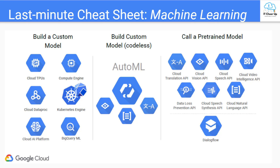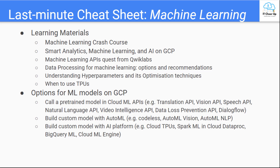If a pre-trained model couldn't work for your case, then build a custom model with AutoML. AutoML is codeless — it uses Google's model with your data. For example, use AutoML Vision with your image data. If both ML options couldn't work for your case, then build a custom model with Google AI Platform, such as loading your ML models in Cloud TPUs, Spark ML in Cloud Dataproc, BigQuery ML, or Cloud ML Engine.